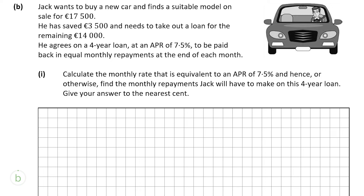Now we move on to Part B, the financial maths section. Jack wants to buy a new car on sale for €17,500. He saved €3,500 and takes out a loan for the remaining €14,000. He agrees a four-year loan at an APR of 7.5% and has to pay back in equal monthly repayments at the end of each month. We need to find the monthly rate equivalent to an APR of 7.5% and hence find the monthly repayment.